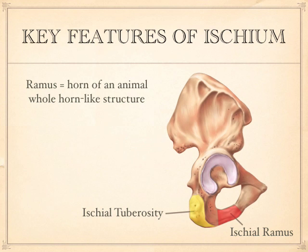Let's come back to this side. If we're now down on the ischium, you want to be able to find the ischial tuberosity, which is the heavy part here. The ischial tuberosity is interesting because this is what you sit on. When you sit on a chair, when you sit on any sort of seat, you always thought you sat on your bum, didn't you?